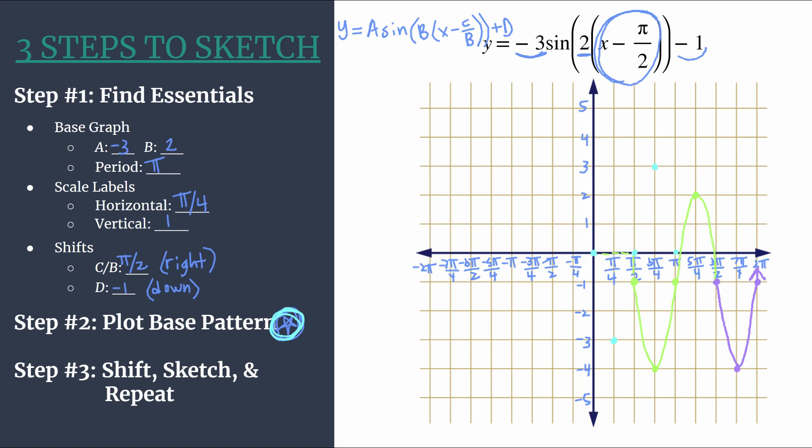But we can work backward going left. We'll have a maximum, a midline point, a minimum, a midline point. And just keep repeating this pattern over and over again. It's like you have a stamp, that green stamp as your pattern, and you're just picking it up, moving four units down, and stamping it again.